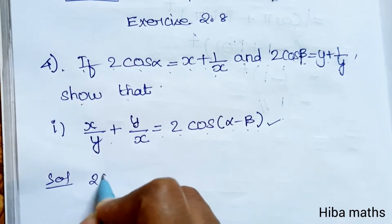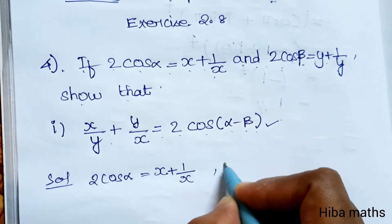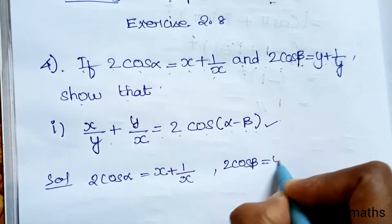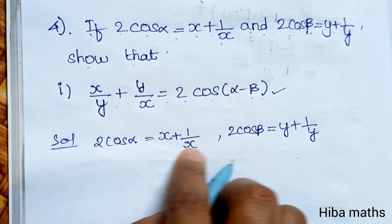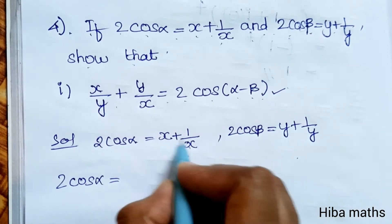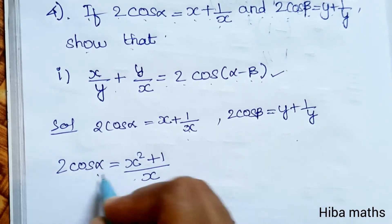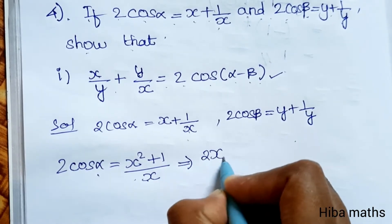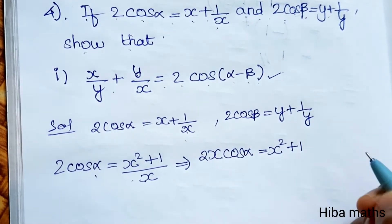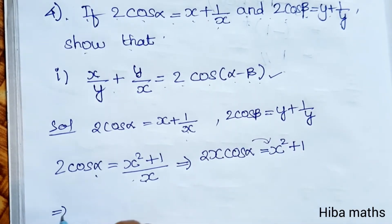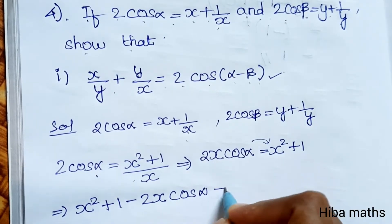First, given 2 cos alpha is equal to x plus 1 by x. Similarly, 2 cos beta is equal to y plus 1 by y. Multiplying through: x squared plus 1 by x, so 2x cos alpha equals x squared plus 1. Rearranging: x squared plus 1 minus 2x cos alpha equals 0.